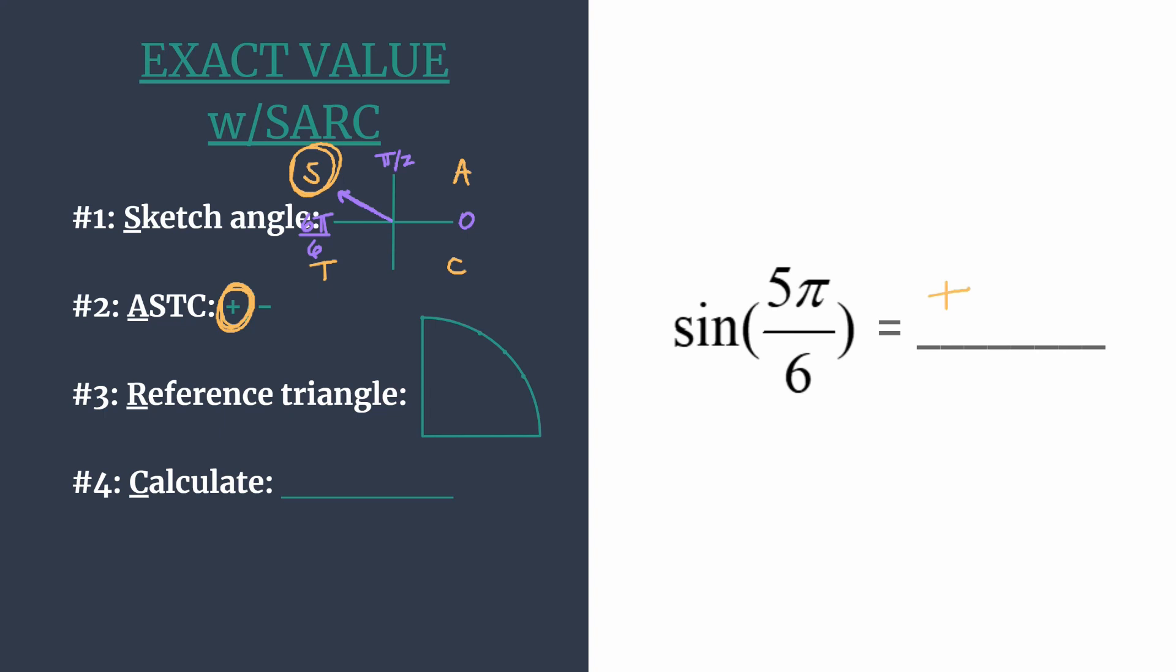If your angle's in the third quadrant, only tangent and cotangent are positive. And in the fourth, only cosine and secant are positive. All right, now that we have that, we're ready to move on to our reference triangle.